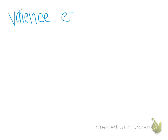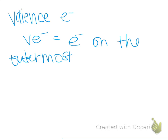Let's take out your periodic table and have a look at what valence electrons mean. I want to review the term valence electrons. Valence electrons — I'll abbreviate as VE — are electrons on the outermost shell of an atom.